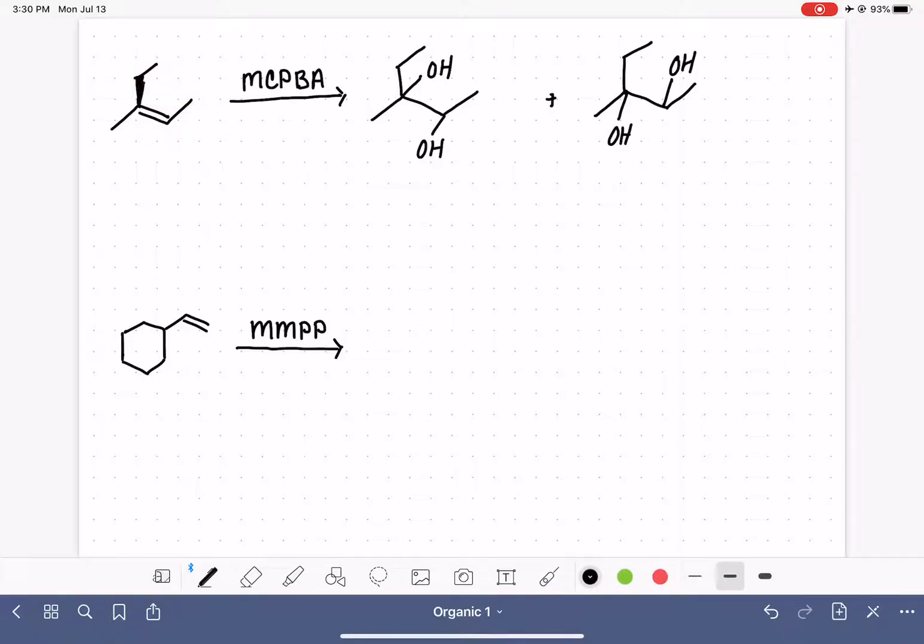Make both of those groups wedges or dashes. It doesn't matter, just make them the same, and then maintain that through the whole entire reaction. So the ethyl on the left and the methyl on the right are always going to be wedges.